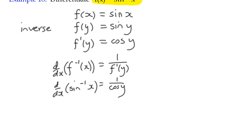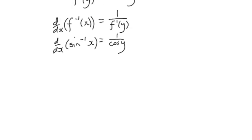Now, it's not quite there, because unfortunately, 1 over cos y is an expression in terms of y and not in x, and we need a function in terms of x.